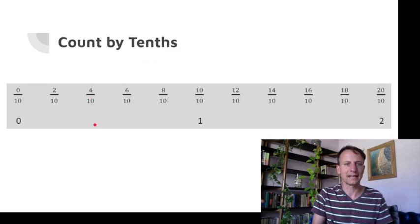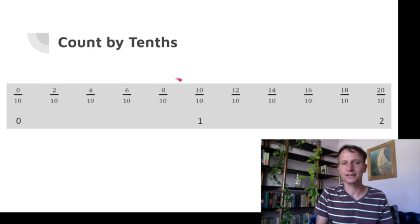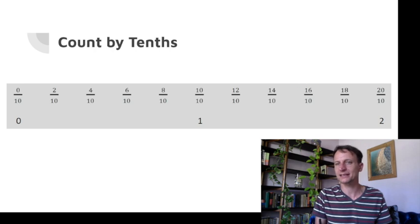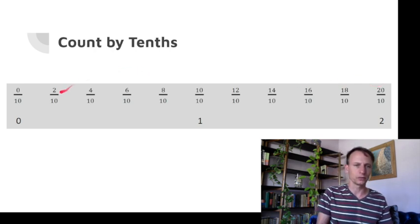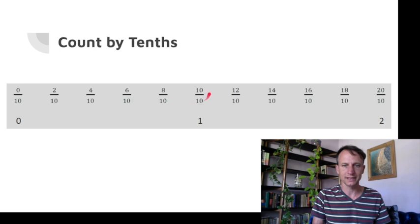So we're going to count by tenths. Here we go. Zero tenths, two tenths, four tenths, six tenths, eight tenths, ten tenths, twelve tenths, fourteen tenths, sixteen tenths, eighteen tenths, twenty tenths. You can see how zero tenths is equal to the whole number zero, ten tenths is equal to one, and twenty tenths is equal to two.